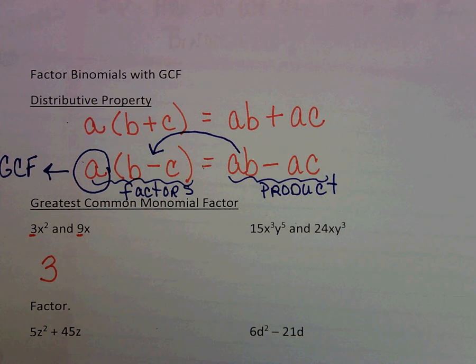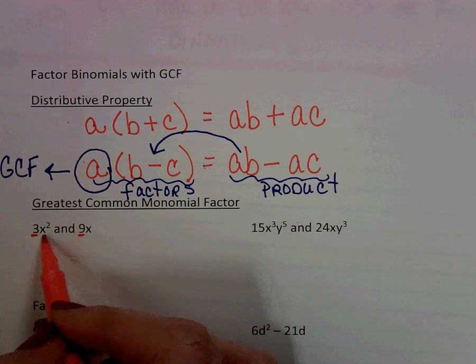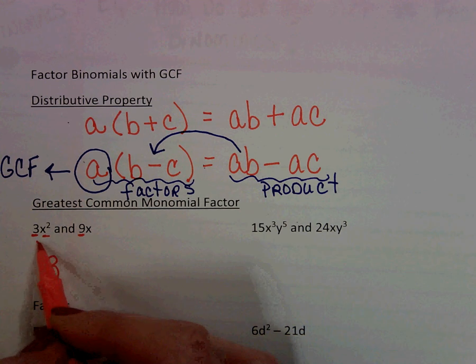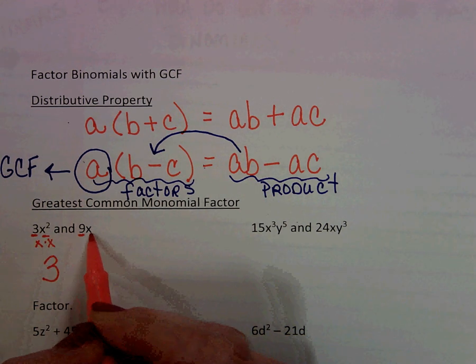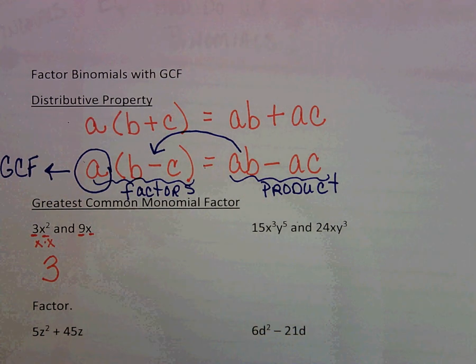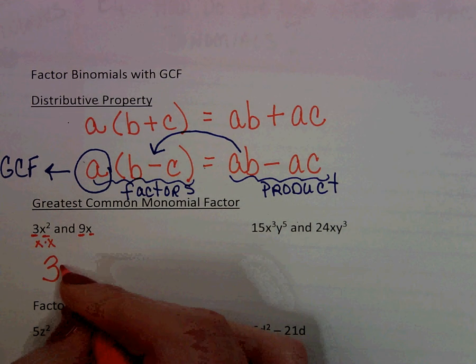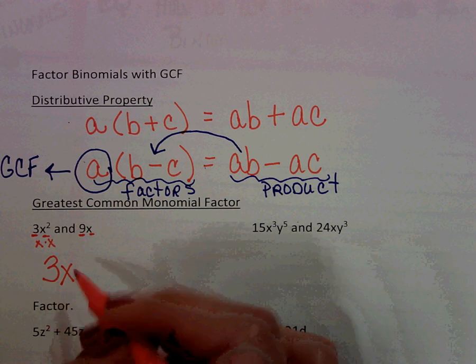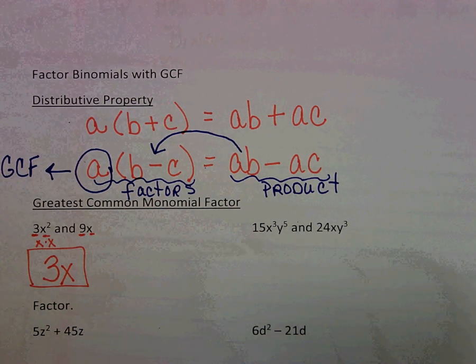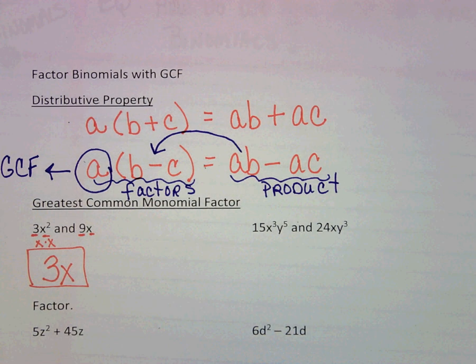Now let's look at our x's. This is x squared, which means x times x, and this is simply x. So how many do they have in common? They only actually have one x in common. So my greatest common monomial factor would be 3x.